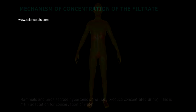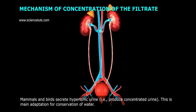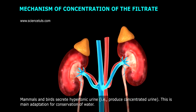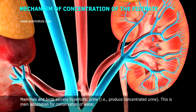Mechanism of Concentration of the Filtrate. Mammals and birds secrete hypertonic urine, that is, produce concentrated urine.